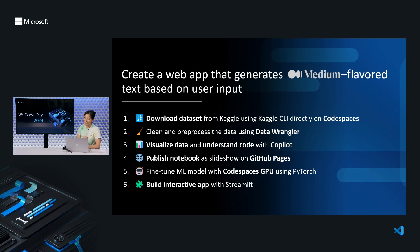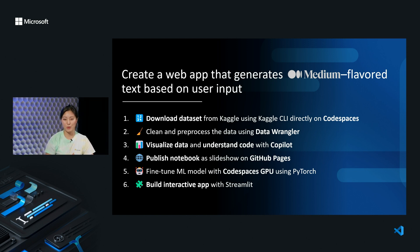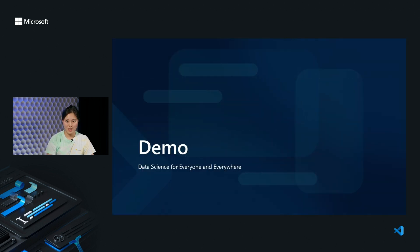I will give you a brief overview of what I will be doing today. This is an end-to-end demo of creating a web app that generates medium-flavored text based on user input. We'll be going through some of these steps — this is a 25-minute session and we don't have enough time to go in depth about all of them, so we might speed through some steps depending on time. Let's get straight into the demo. I have my notes here so if I keep looking at them that's why.